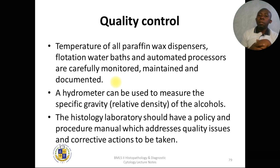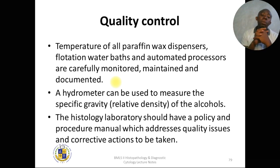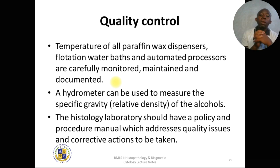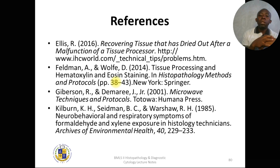For quality control: temperature of all paraffin wax dispensers, flotation baths, and automated processors must be monitored, maintained, and documented. A hydrometer can be used to measure the specific gravity of alcohol to ensure appropriate density for effective dehydration. The laboratory should have a policy and procedure manual that addresses quality issues and specifies corrective actions to be taken.